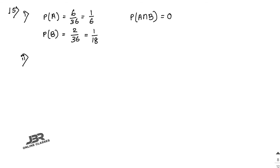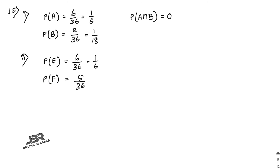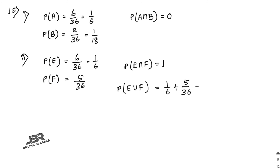Part 2 of sum 15: A doublet or a total of 6. Doublets are (1,1), (2,2), (3,3), (4,4), (5,5), (6,6), so P(E) = 6/36 = 1/6. For total of 6: outcomes are (1,5), (5,1), (2,4), (4,2), (3,3) — P(F) = 5/36. The intersection is only (3,3), so P(E intersection F) = 1/36. Therefore P(E union F) = 1/6 + 5/36 − 1/36 = 5/18.